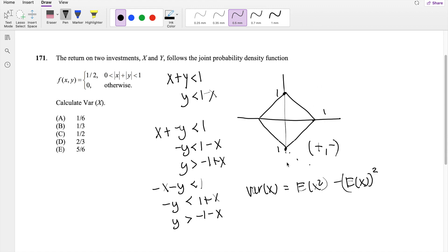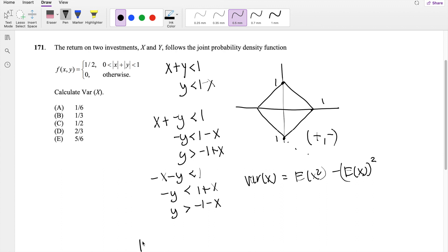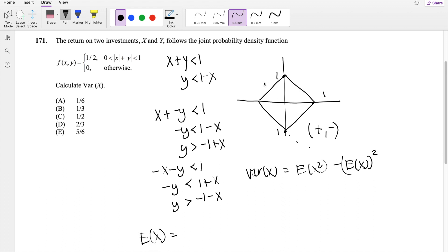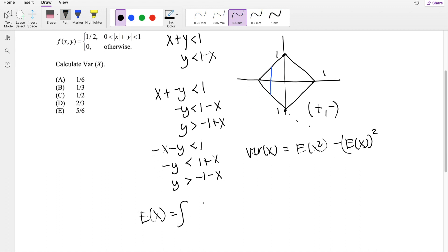And let's find the expectation first. Expectation of x, I can divvy it up into two. I'm going to solve in terms of dy then dx. So if I solve in terms of dy like this way, I'm summing up x from negative 1 to 0, and then summing up y, I don't know that yet.